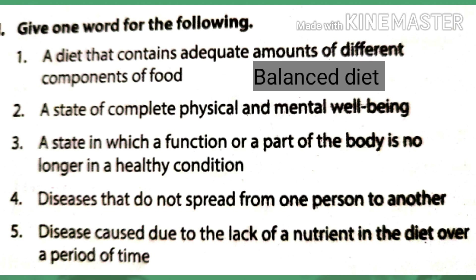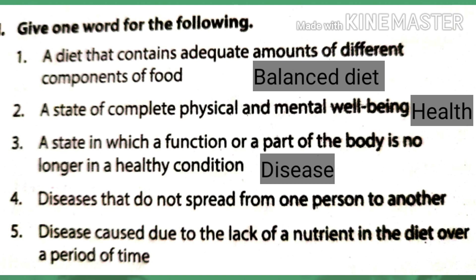Our next exercise is Give One Word. First: a diet that contains adequate amounts of different components of food — balanced diet. Second: a state of complete physical and mental well-being — health. Third: a state in which a function or part of the body is no longer in a healthy condition — disease. Fourth: diseases that do not spread from one person to another — non-communicable diseases.